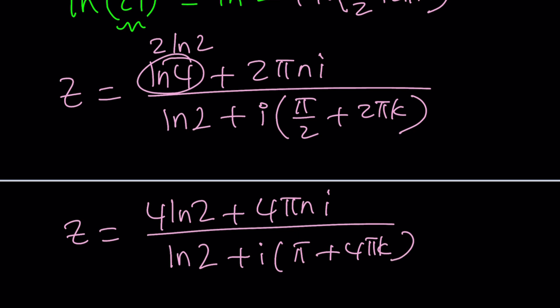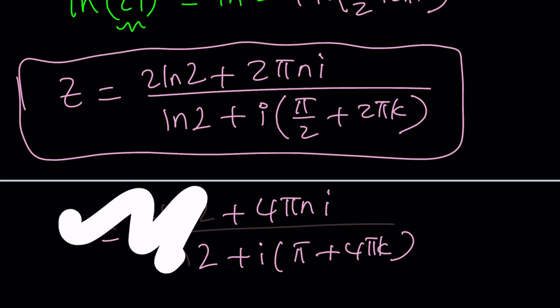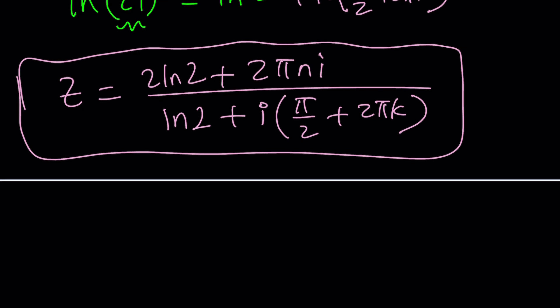If you multiply the numerator and the denominator by 2, you get 4ln2 plus 4pi ni divided by ln2 plus i times pi plus 4pi k. I'm not sure if that's going to be a huge improvement. But the problem with that is, I mean, I think I want to get back to this. So, let's go ahead and replace ln 4 with 2ln2 here. And then kind of ignore this for now and focus on this because I want to show you something. Let's forget about this stuff because that's not super important. Now, let's focus on this. Okay?